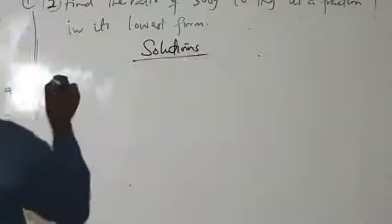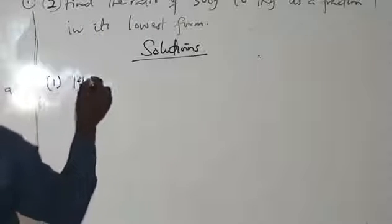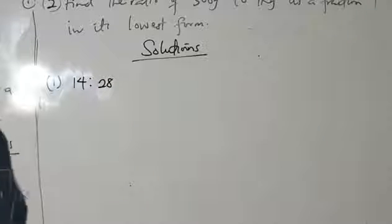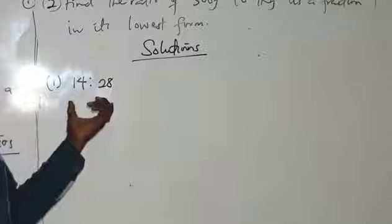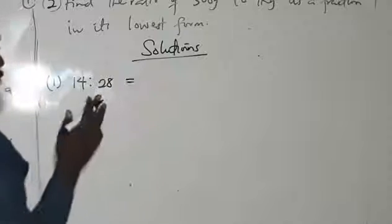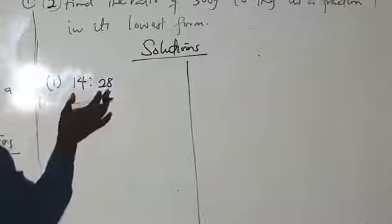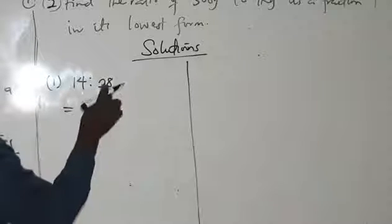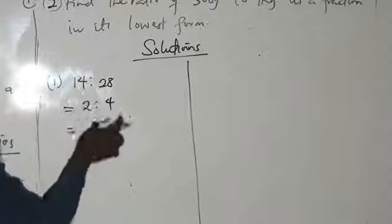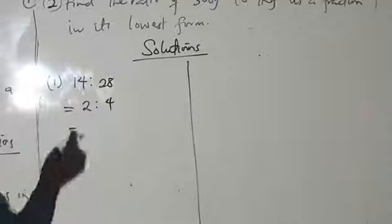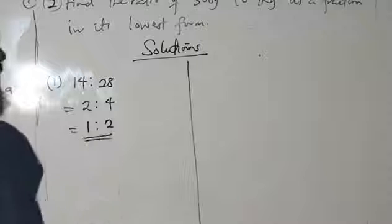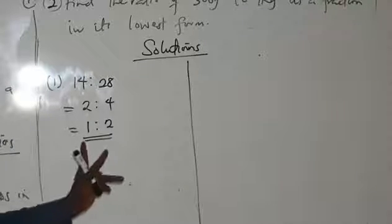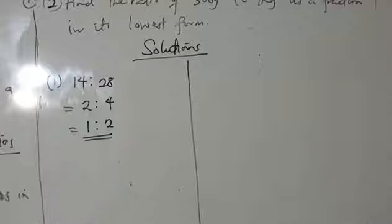The first one: 14 to 28. We look for numbers that can divide both of them without a remainder. You can do it in two ways — write it as a fraction or continue directly. So 7 can divide 14 to give 2, and 7 divides 28 to give 4. Then 2 can divide both: 2 gives 1, and 4 gives 2. So the answer is 1 to 2. We have simplified it to its lowest form and cannot reduce further.